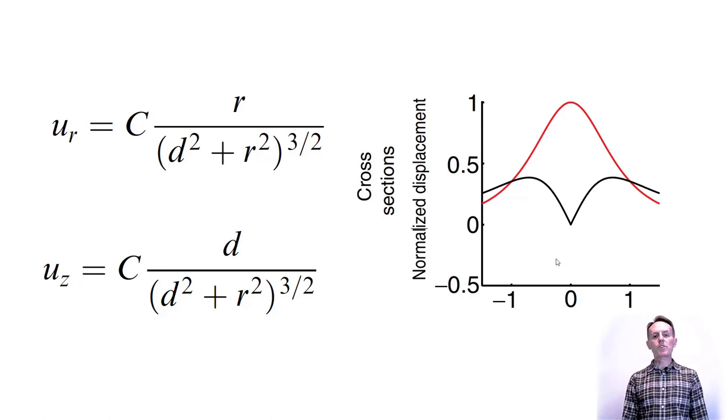We use the letter u to denote displacement. Vertical displacement or the height change can then be referred to as u subscript z, with z referring to the vertical direction. The horizontal displacement is u subscript r. The displacement depends on the horizontal distance from the source and the depth of the source, as the equations show, as well as the source strength parameter indicated with the symbol c.